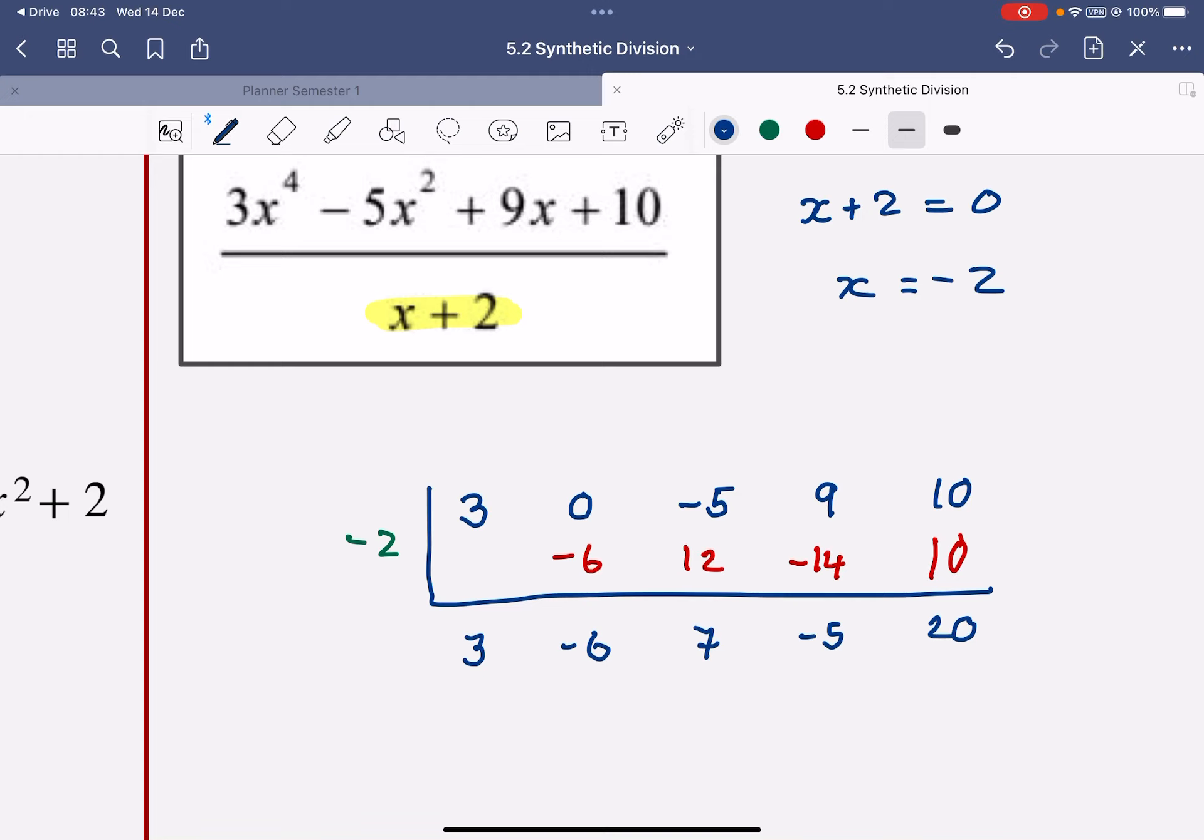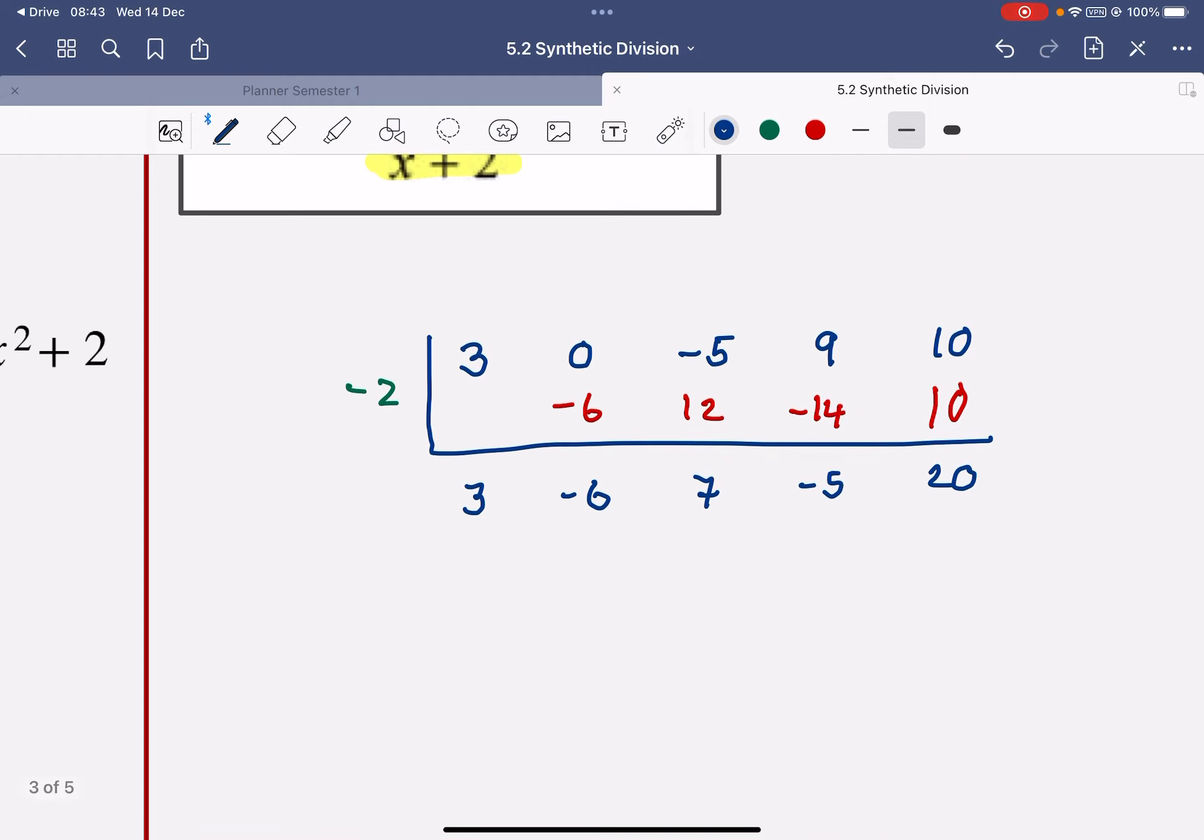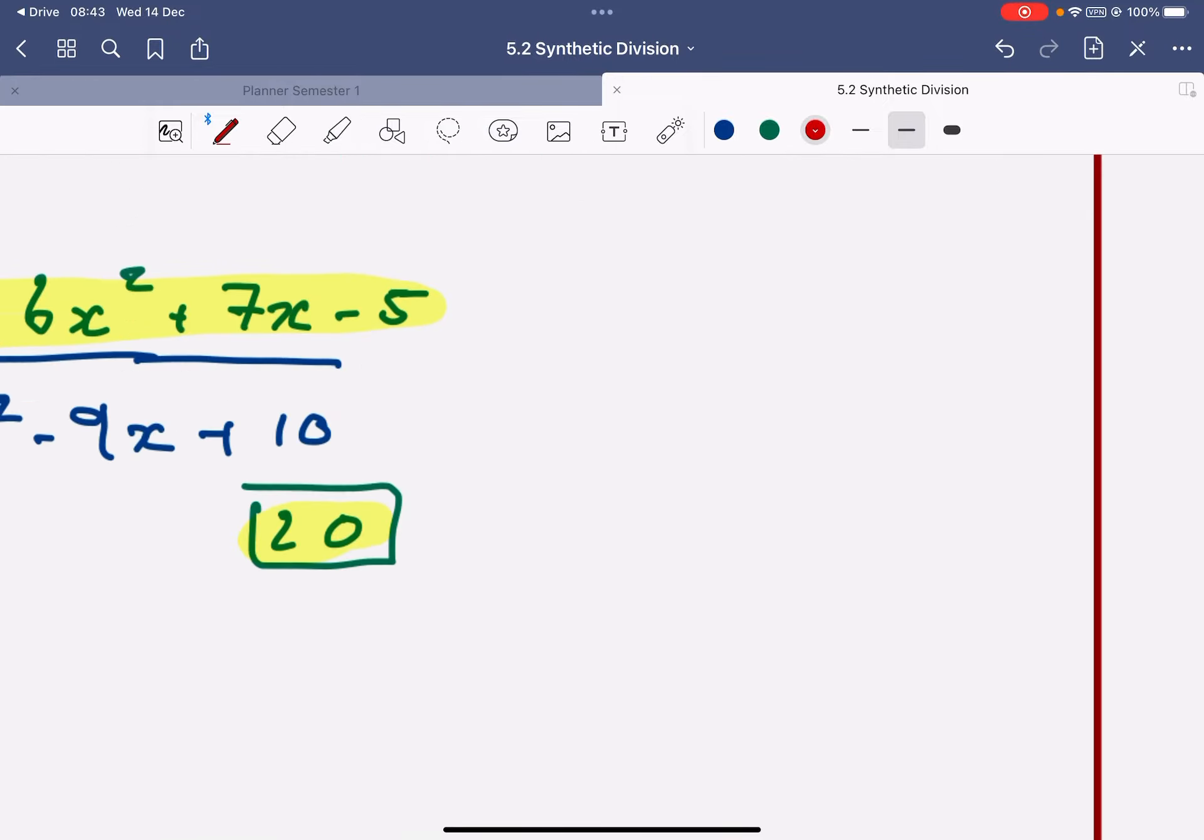So what have I got? The last number, that tells me the remainder. So this is the remainder, 20. Remember what we had for the remainder before? 20.